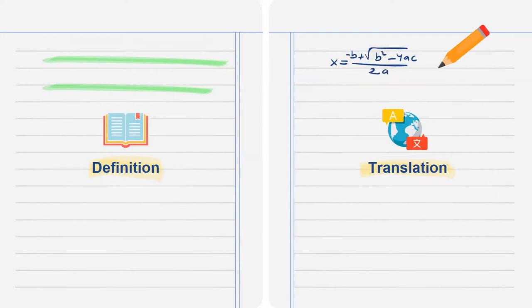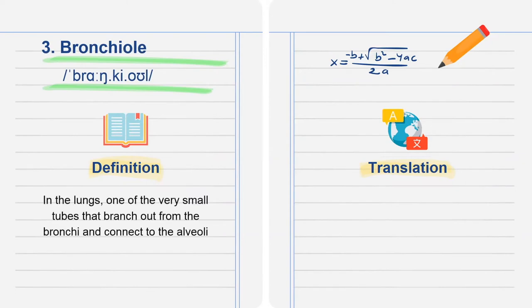The third word is bronchiole. In the lungs, one of the very small tubes that branch out from the bronchi and connect to the alveoli.